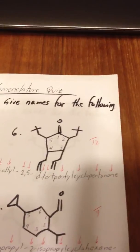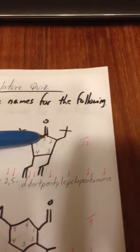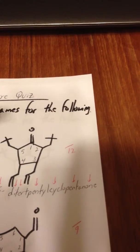Cyclopentanone ring, so we start numbering at the ketone, and we go around clockwise.